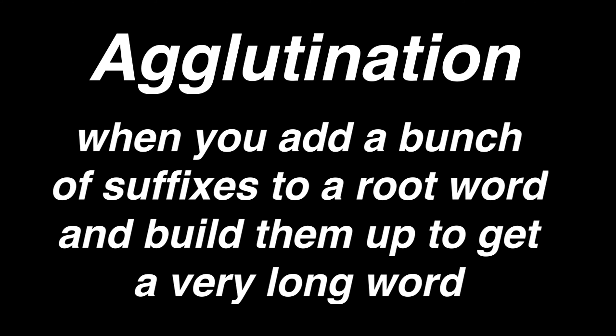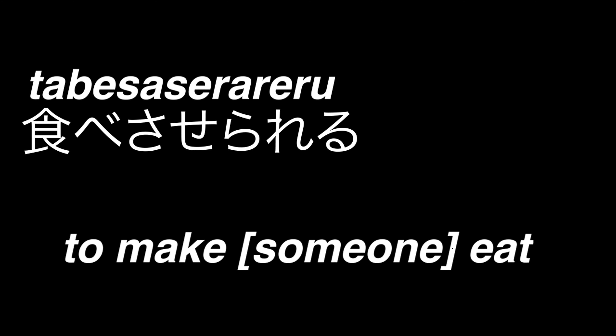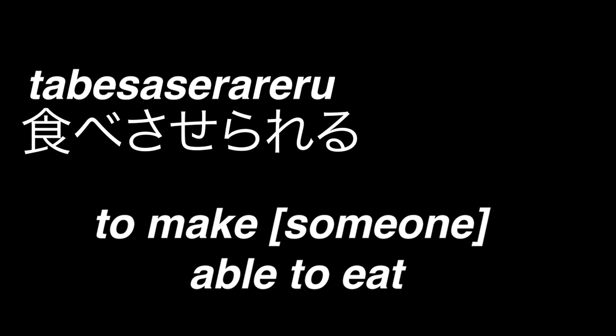Japanese verbs are highly agglutinative. Agglutination is when you add multiple affixes to a root word and build them up to get really long ones. For example, let's take the verb taberu, to eat. We can add suffixes by taking off the ru ending. If we add saseru, the verb now has a causative meaning: to make someone eat. Taking off ru again, we can add rareru to give the verb an abilitative meaning, so it all means to make someone able to eat — tabesaserareru.